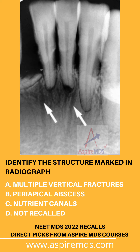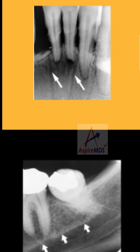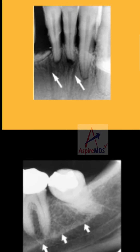Regarding their location, nutrient canals appear as radiolucent lines running vertically from the tooth downwards. They are mostly found in the periapical radiographs of the mandibular anterior region as well as mandibular posterior regions. You can see two radiographs here — the first was asked in the exam, and in the second, white arrows mark radiolucent lines running downwards from the periapical region towards the inferior alveolar nerve region.